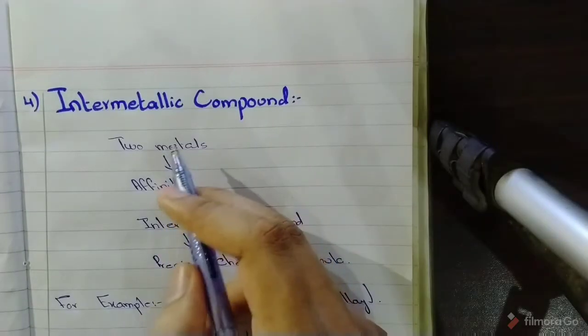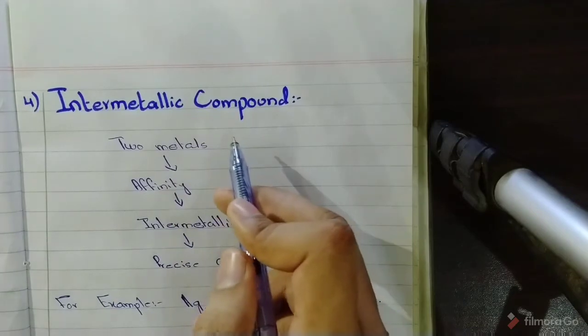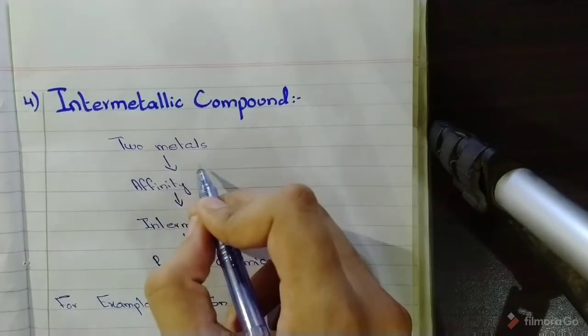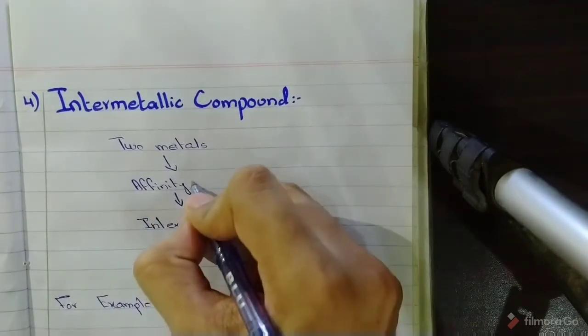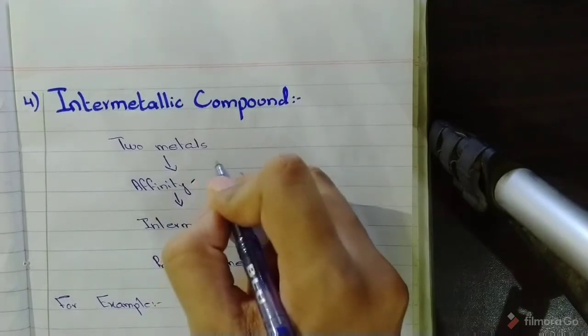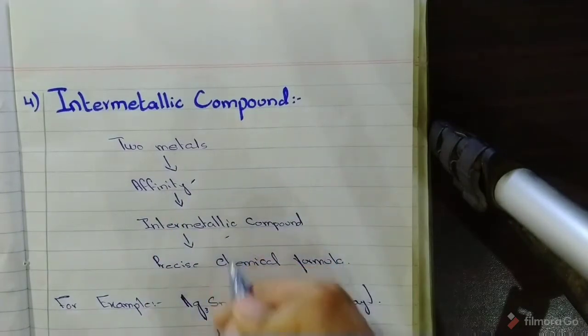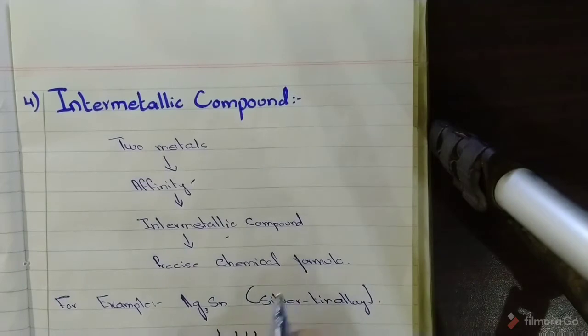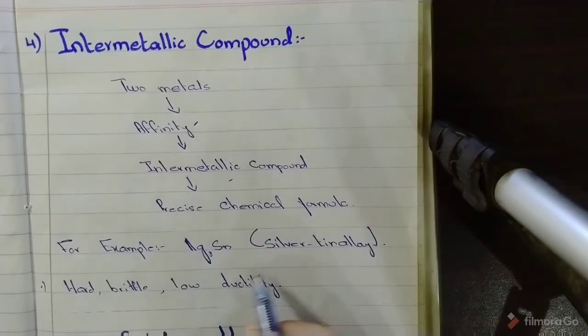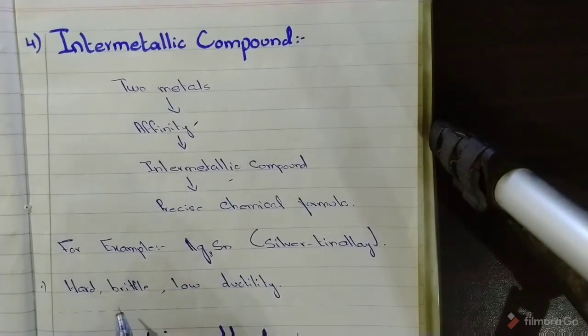And the last thing is the formation of intermetallic compounds. When two metals have particular affinity among themselves, they form intermetallic compounds with precise chemical formula, for example silver-tin alloys.